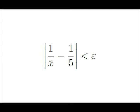So let's start out assuming that the absolute value of f(x) minus L is less than some epsilon. In this problem, f(x) is 1 over x and L is 1 fifth. Our goal is to transform this into the absolute value of x minus 5 is less than some algebraic manipulation of epsilon.